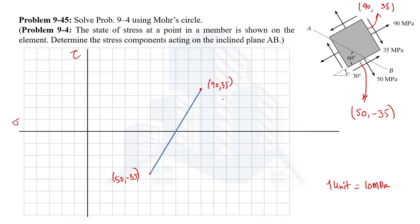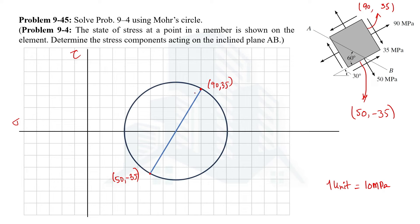Joining these two points gives us the diameter of the Mohr's circle. Once we have the diameter, we can find the center — which is the midpoint of the diameter — and then draw the Mohr's circle using that center and the radius.